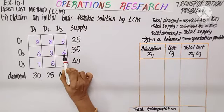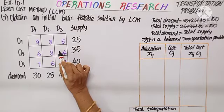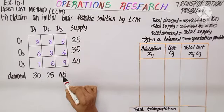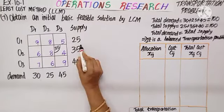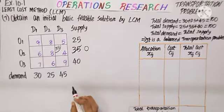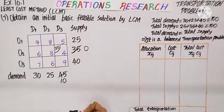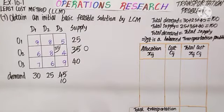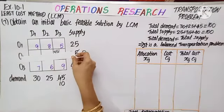For my first allocation I must select the cell which has the least cost. So I select this cell. Here I have 35 and 45. The minimum is 35, so I allocate 35 here — this supply becomes 0. The remaining demand is 45 minus 35, which is 10. This row is now done, so let us hide the second row.